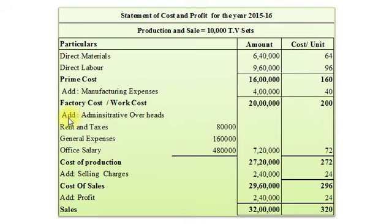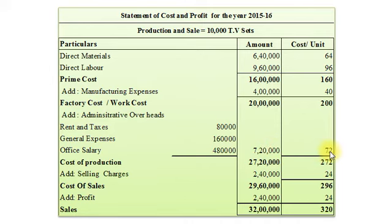To factory cost we will add administrative overheads. We have Rent and Taxes Rs. 80,000, General Expenses Rs. 1,60,000, and Office Salary Rs. 4,80,000. So total administrative overheads amount to Rs. 7,20,000 and per unit Rs. 72. So our Cost of Production amounts to Rs. 27,20,000 and per unit Rs. 272.